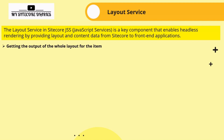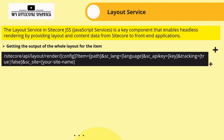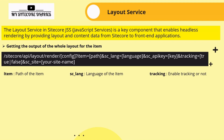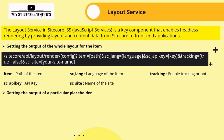To get the output of the whole layout for an item, you can use the following endpoint. In this endpoint: 'item' is the path of the item, 'sc_language' is the language of the item, 'tracking' is whether you want to track it (true or false), 'sc_api_key' is a unique ID of your application, and 'sc_site' is the site name — since in Sitecore you can have multiple sites defined in the site definition file.